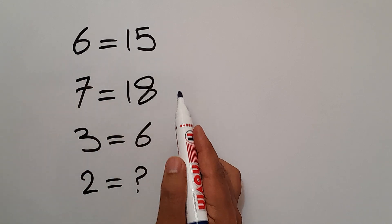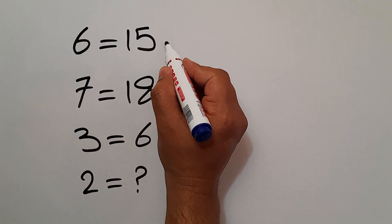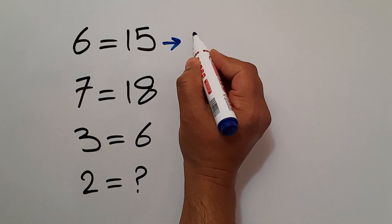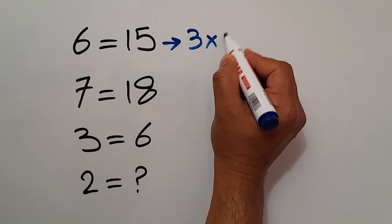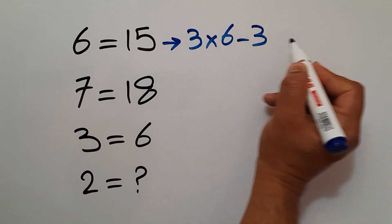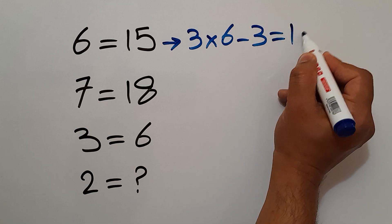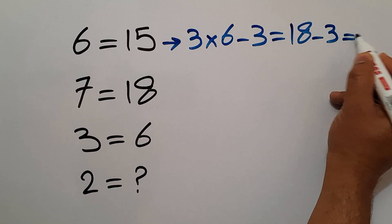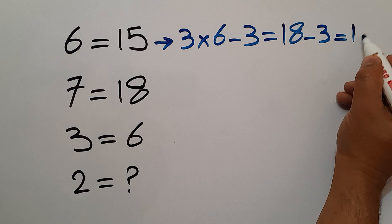In the first line, we have 6 and 15. 3 times 6 minus 3 equals 18 minus 3, which equals 15, the right-hand side number.